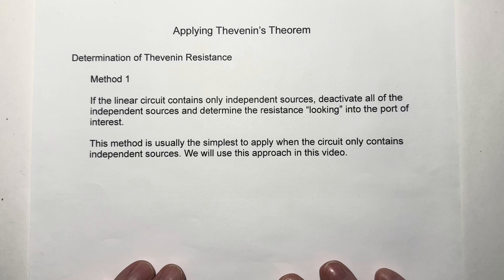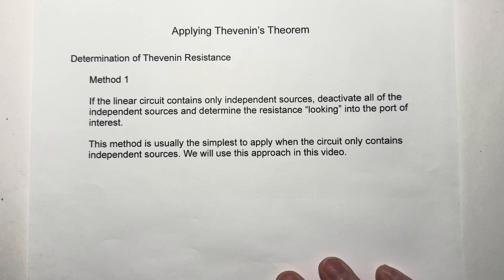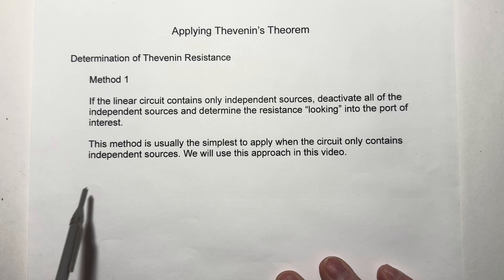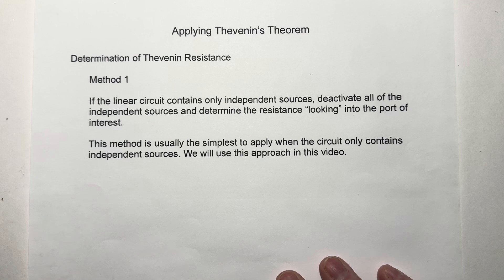All right, there are three ways to do this. Method number one, if the linear circuit contains only independent sources, the kind that we've used so far in all the preceding videos, we deactivate those sources and just pretend that we're connecting an ohmmeter to the port and determine the equivalent resistance using all of our normal circuit reduction techniques. This is usually the easiest method to apply, and that's what we're going to do in this video.